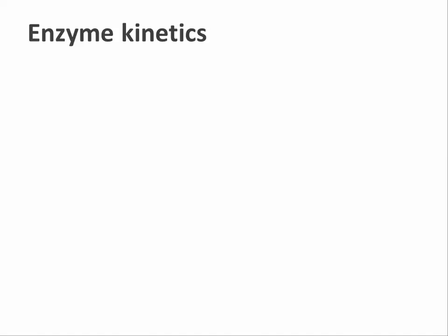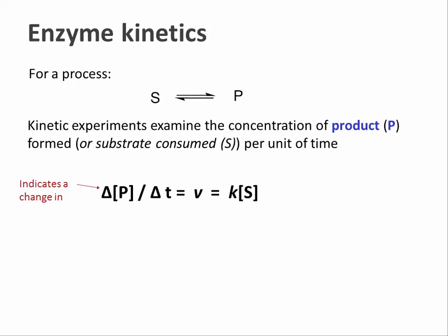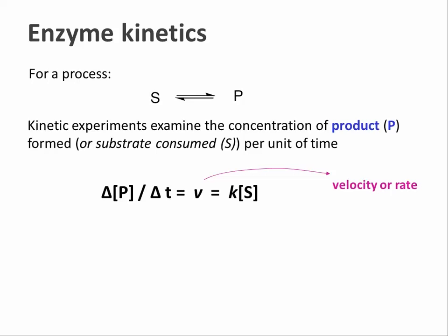So let's look at the kinetics of a chemical reaction. In a simple process of S turning into P, we analyse the kinetics of the reaction by measuring the rate of formation of product over time. That is expressed typically as ΔP over ΔT, meaning a change in the concentration of P over a unit time. ΔP over ΔT equals V, the velocity or rate of the reaction, and that equals the product of the concentration of S and small k, the rate constant for this reaction.